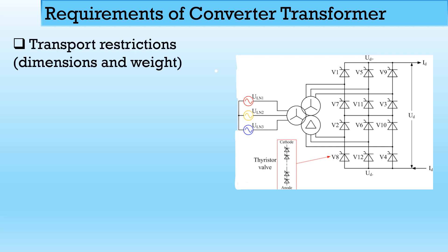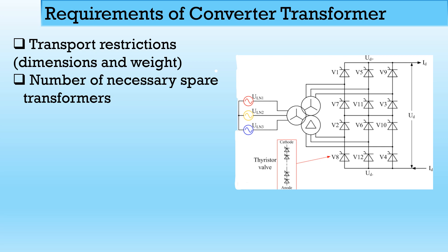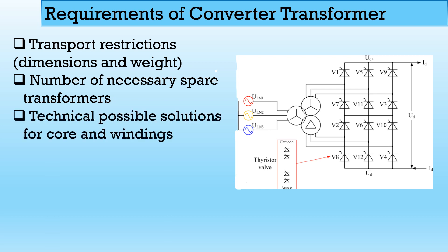If you design a single unit three-phase transformer, its dimension and weight will put restrictions on transportation. The number of necessary spare transformers is also a concern: if you use a single three-phase transformer, you need one spare of that large size. But if you use three single-phase two-winding transformers, then one single unit is sufficient as a spare. Technical possible solutions for the core and winding are required because the rating of the converter transformer is high.